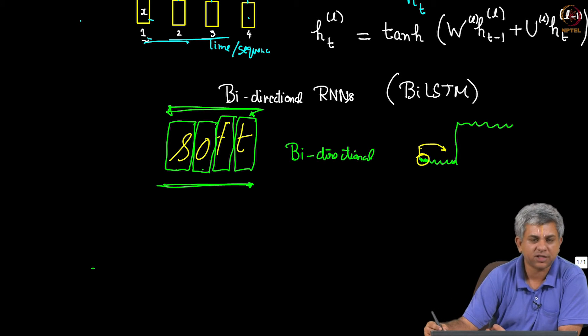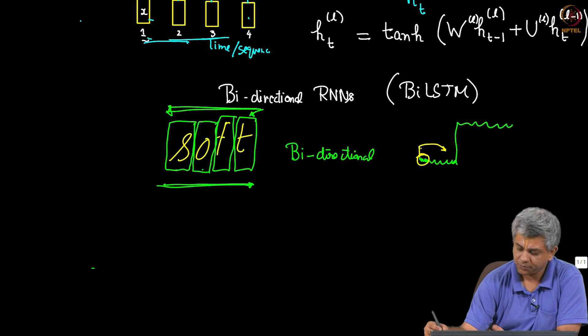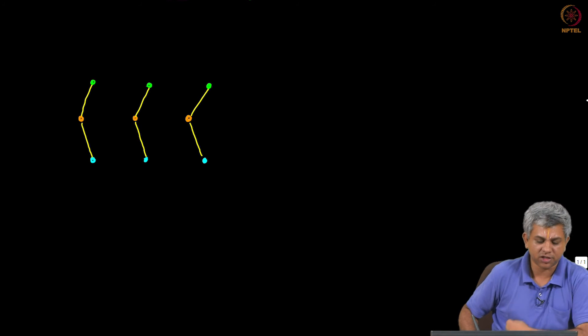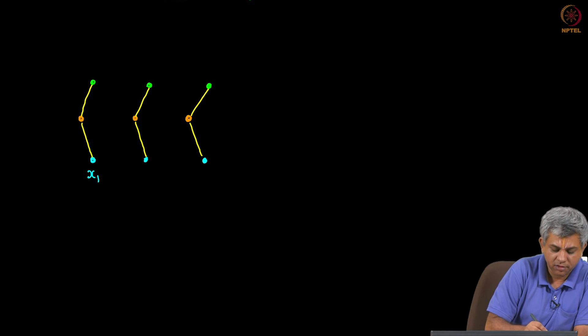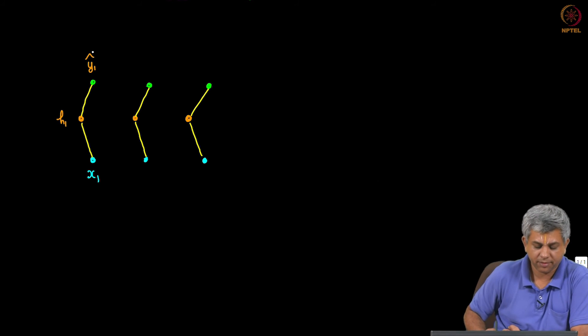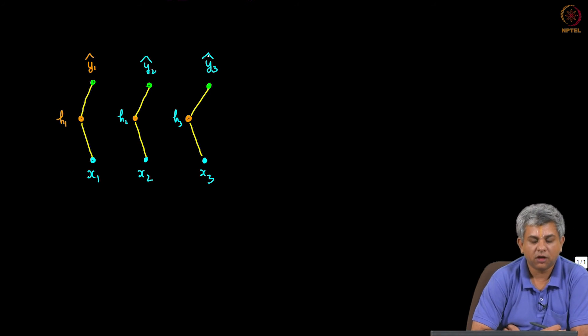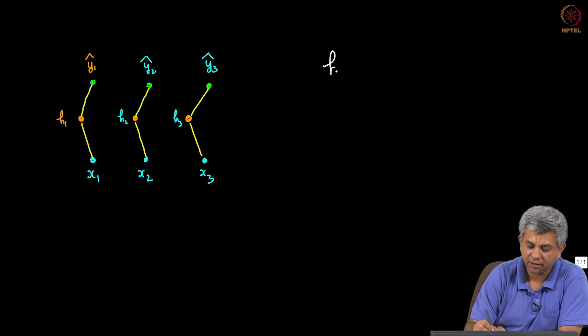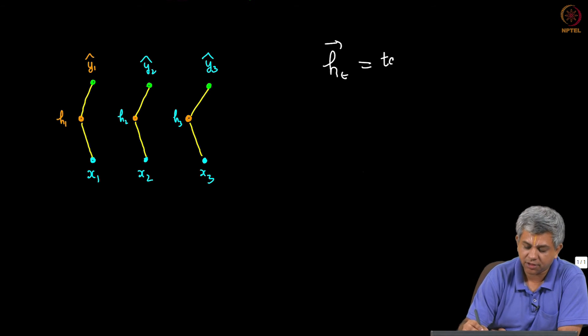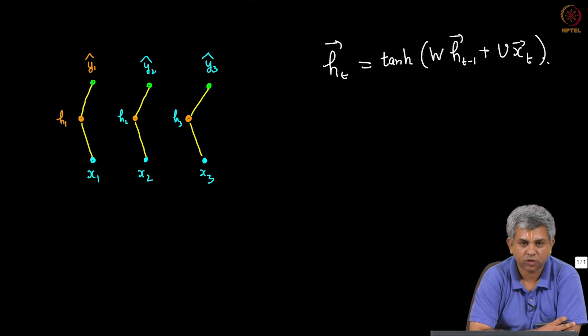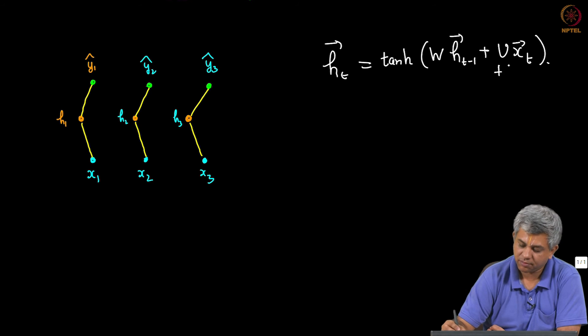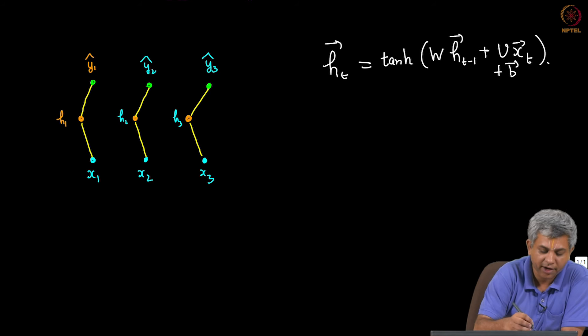Now how do we actually do bidirectional LSTM? It is a small tweak over the usual RNN. So let us look at a figure. So I am going to reduce our boxes to circles here. Once again let us say this is X1, this is H1 and this is Y1 hat. So usually we would go in the forward direction and you would usually write something like H_T vector is let us say tan H of W H_{T-1} vector plus U X_t vector. So this is what we usually do and plus of course 1 B vector also to add bias. Sometimes I forget writing the bias down.